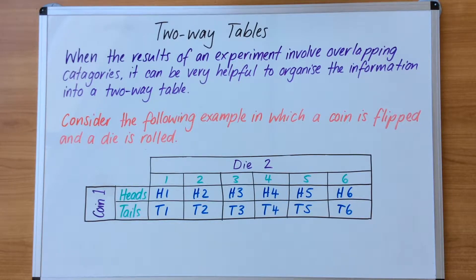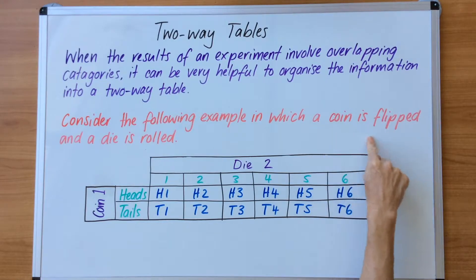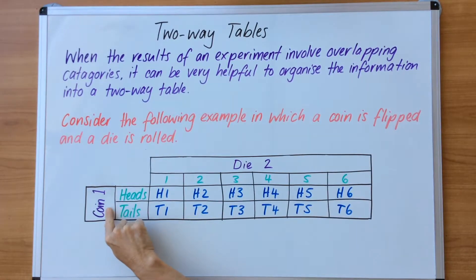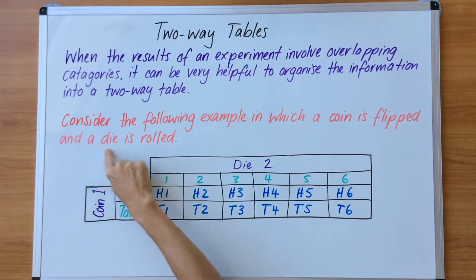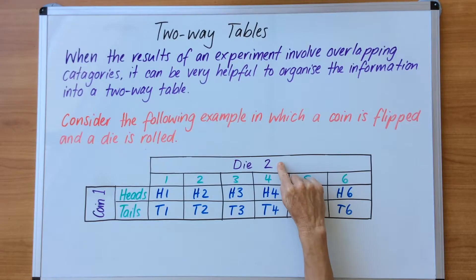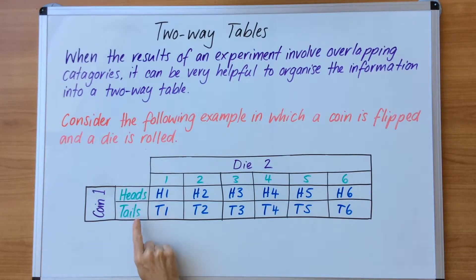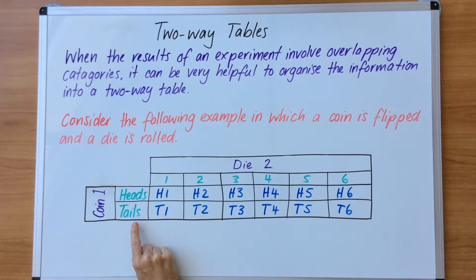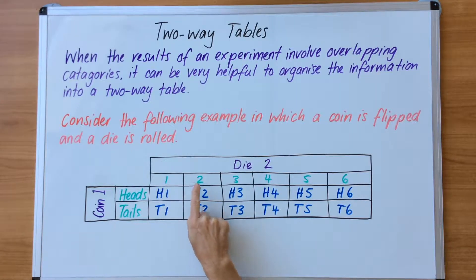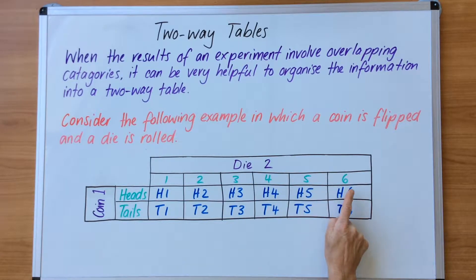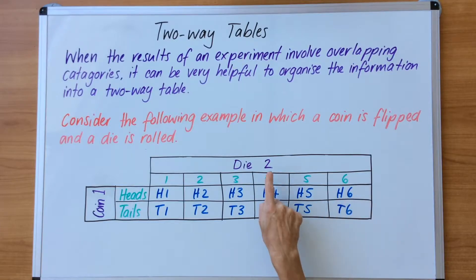The first thing is we look at the order it's written in. It says a coin is flipped so the coin goes first and the die is rolled second. We have heads and tails as the two options for the coin and we have one, two, three, four, five, six — six options for the outcome of the die.